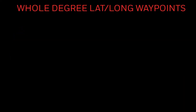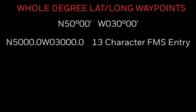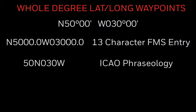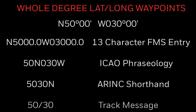Here's where it can get confusing. Let's take a look at a whole degree lat long of 50 degrees north latitude and 30 degrees west longitude. This would usually be written like you see here. However, a complete entry in the flight management system would entail 13 characters in the scratch pad — 6 for latitude and 7 for longitude. The same coordinates when communicated over radio would be '50 north 30 west.' An airing shorthand entry would be 5030N, and a track message would display 50 slash 30. Five different ways of describing the exact same point.